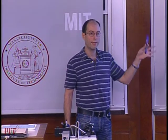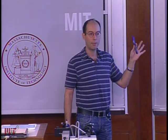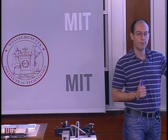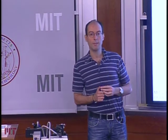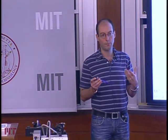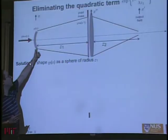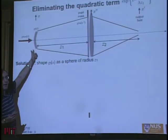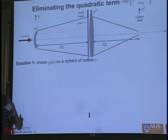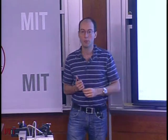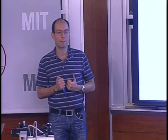Goodman goes over three methods to eliminate this unwanted quadratic. One is to lay out the input transparency on a spherical surface instead of the typical planar surface. Because now these points in the transparency start with an original phase delay — the radius of curvature has to be exactly z1 — so that it cancels this unwanted quadratic.